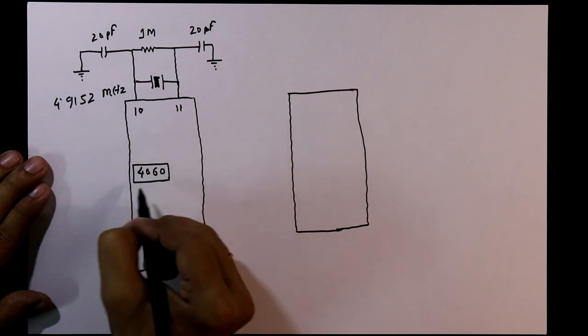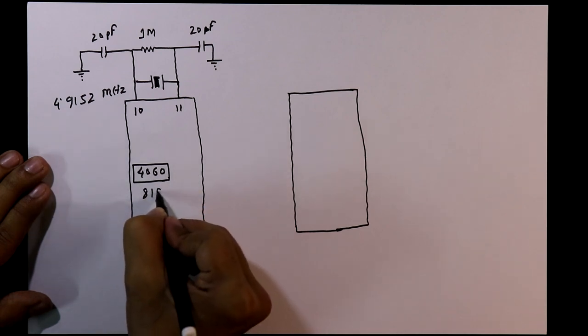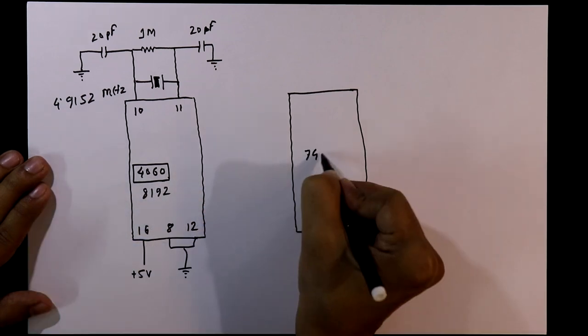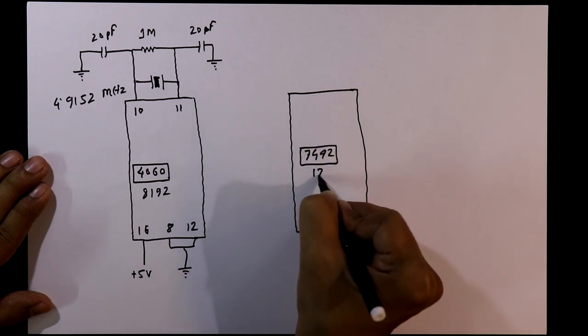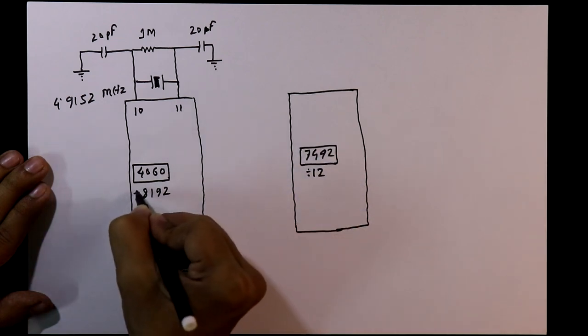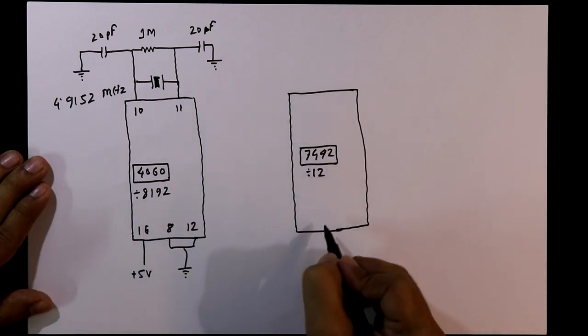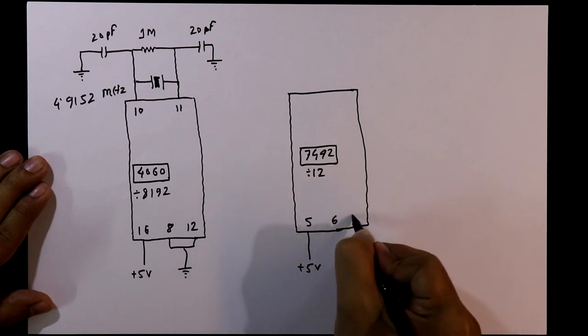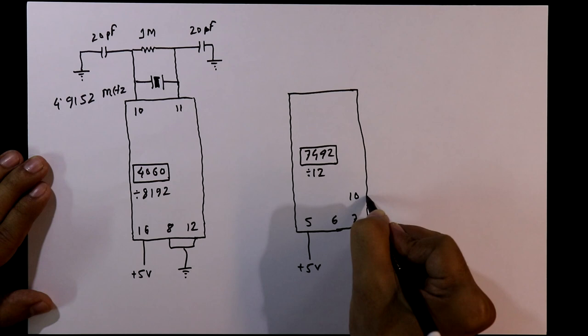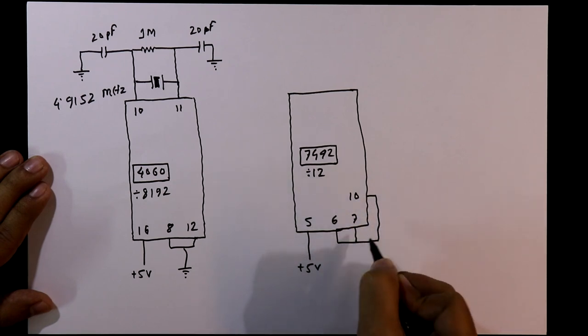Now this IC is dividing by 8192 and this is the IC 7492. Its pin number 5 should be connected to the plus 5V and its pin number 6, 7 and 10, these three should be connected to the ground.